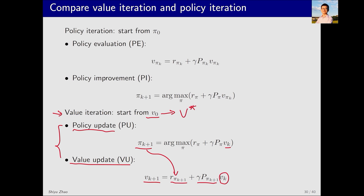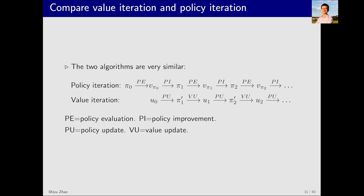Some readers may have noticed the similarity between policy iteration and value iteration. To compare them, let's look at this expression. Policy iteration begins with a policy pi zero, undergoes policy evaluation to get v_pi_zero, then policy improvement to obtain pi one, v_pi_one, pi two, v_pi_two, and so on. By contrast, value iteration starts from a value v zero — starting from a value, not a policy. To compare the two algorithms, we forcibly align their starting points, then alternate between policy update and value update, achieving a new policy and a new value.